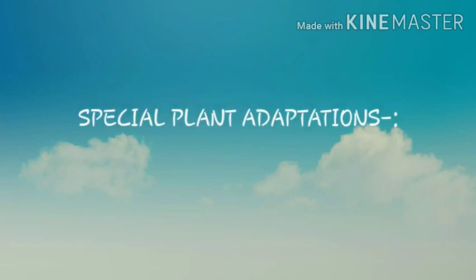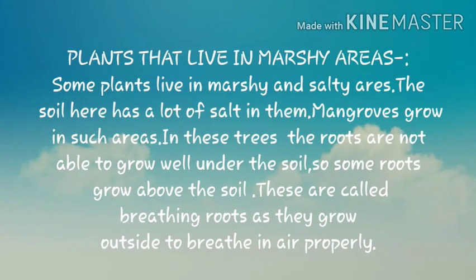Special plant adaptations. Some plants show special adaptations. Plants that live in marshy areas — some plants live in marshy and salty areas where the soil has a lot of salt. Mangroves grow in such areas. In these trees, the roots are not able to grow well under the soil, so some roots grow above the soil. These are called breathing roots because they grow outside to breathe in air properly.